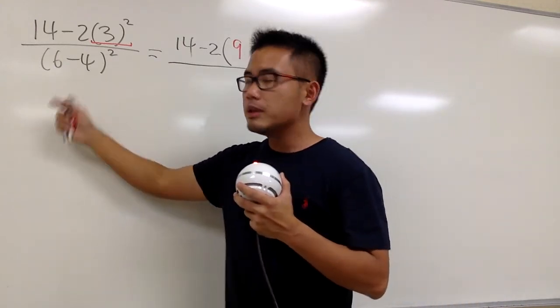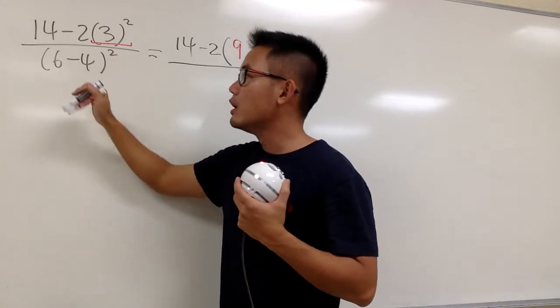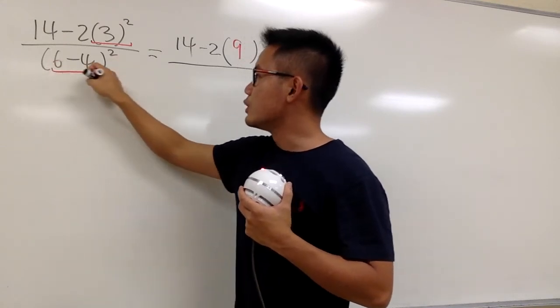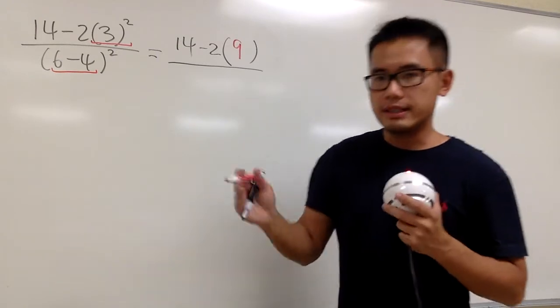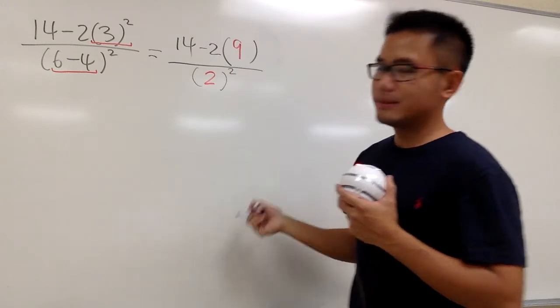Because right here on the bottom, we have 6 minus 4 in the parentheses, and then to the second power. We are also going to be doing this right here as well. 6 minus 4 is 2. So we have a 2 inside, and then square like this.